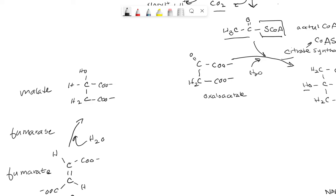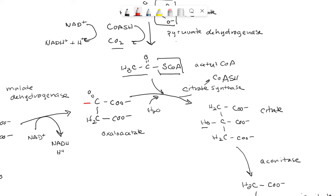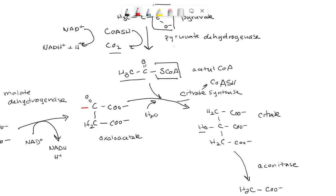Now from malate, we can regenerate oxaloacetate using malate dehydrogenase. And this also yields an equivalent of NADH from NAD+. And then we're back to the beginning. We've taken this hydroxyl and we've oxidized it. And that oxidation has returned us to oxaloacetate. And with that oxaloacetate, we are now ready to grab another equivalent of acetyl-CoA and put this acetyl group back on the carbon.